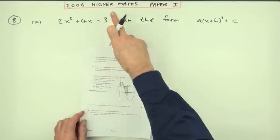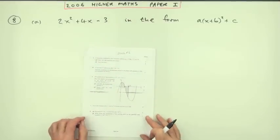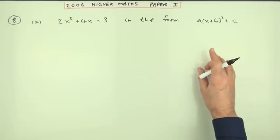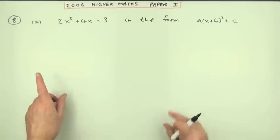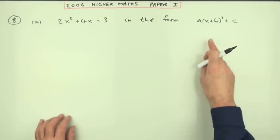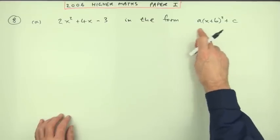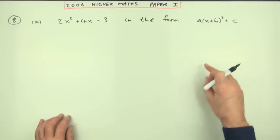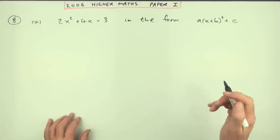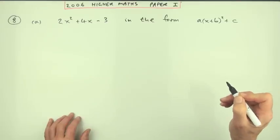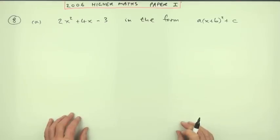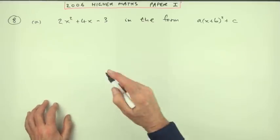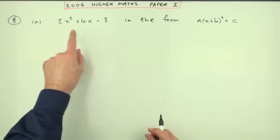Number eight from the 2006 Higher Math Paper One: complete the square. For Part A there are three marks — write it in this form. Sometimes it's a bit irritating when they say write it in a certain form with a's, b's, and c's, as to whether you then have to state a equals, b equals, c equals. And some questions you do have to do that. So completing the square would be this.